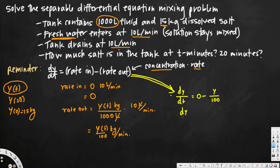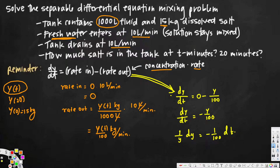This is a separable differential equation. We separate the y terms and t terms: 1/y dy equals negative 1/100 dt. Now we integrate both sides.